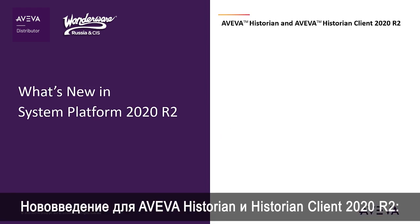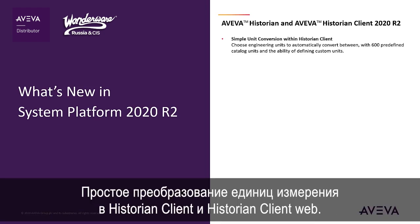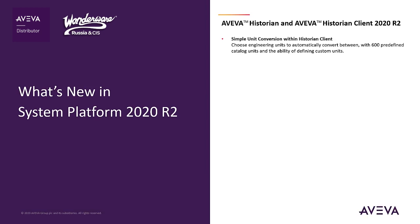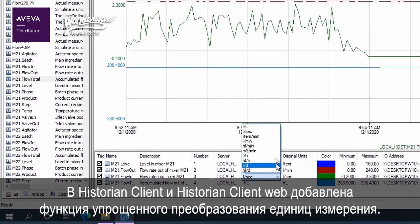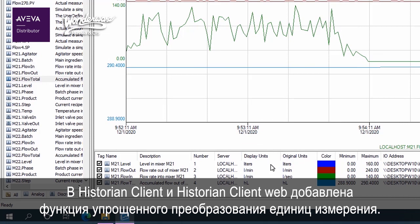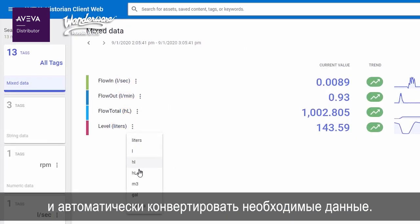New with Historian and Historian Client 2020 R2: Simple Unit Conversion within Historian Client and Historian Client Web has been added. Users now have the ability to select and automatically convert between a predefined catalog of units.